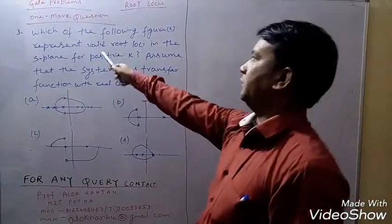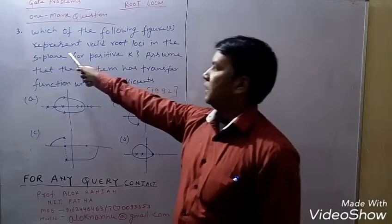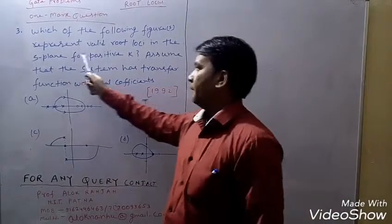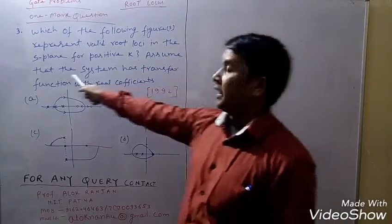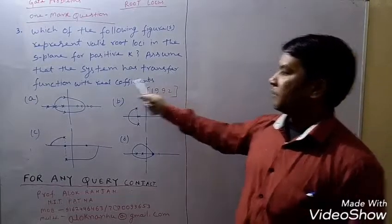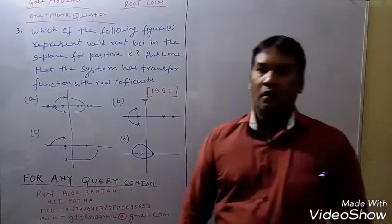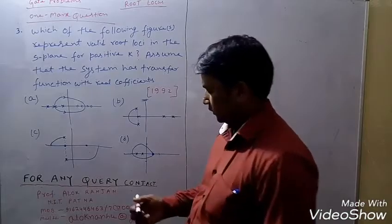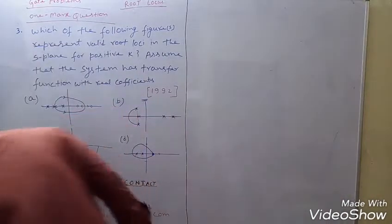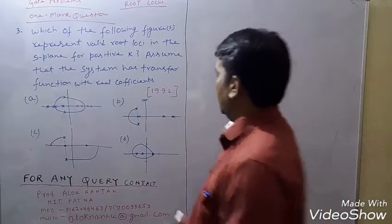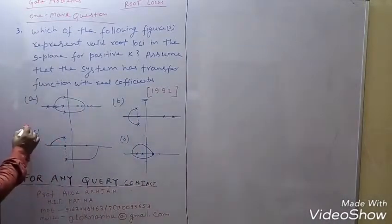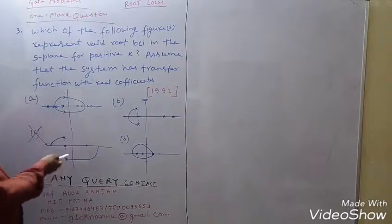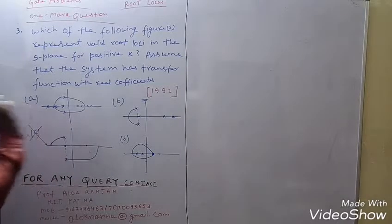Now the third problem: which of the following figures represent valid root loci in the s-plane for positive K? Assume the system has a transfer function with real coefficients. First, one option cannot be a root locus because root locus is symmetrical about the real axis — so that case is not possible.